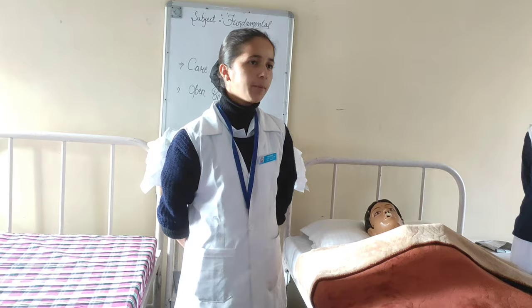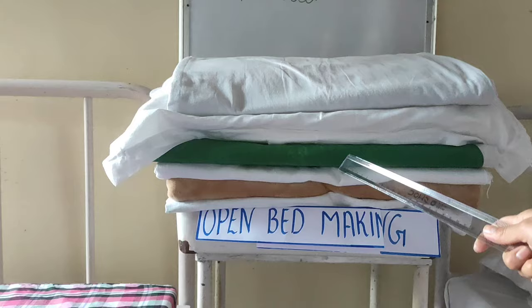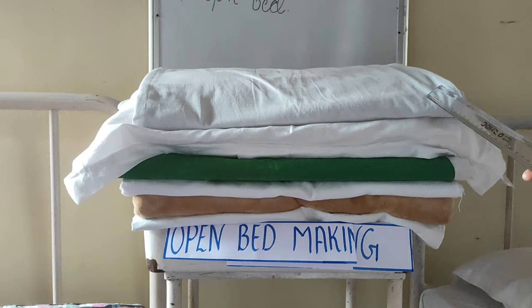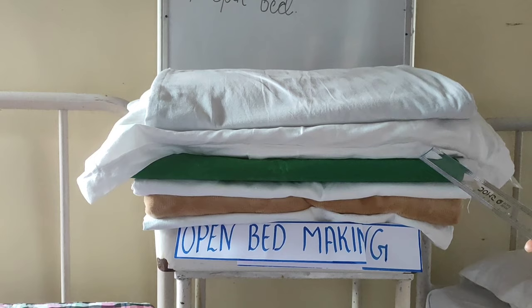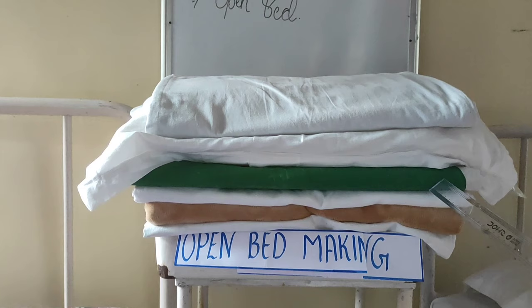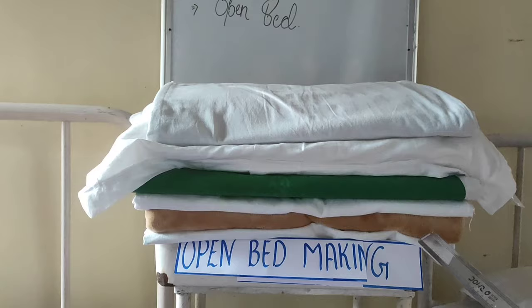The second principle is preparation of articles. The open bed making tray contains the following articles: a bottom sheet to cover the mattress, a pillow to provide comfort to the patient, a Macintosh and draw sheet to prevent soiling of linen, a top sheet to prevent direct contact of the blanket with the patient, a counter pen to maintain uniformity in the ward, and a blanket to provide warmth to the patient.